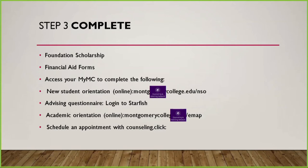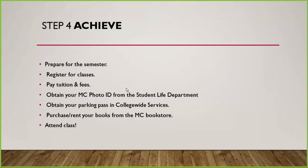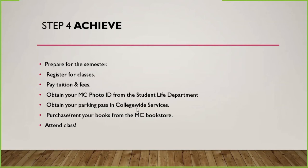Attend an academic orientation online by clicking on the Starfish icon once you're inside your account. Once you activate your account, you will be able to make an appointment with a counselor. The fourth step is to prepare for the semester — make sure you have your books ready, know what classes and buildings you will attend, and the class hours. You will register for classes online, pay tuition and fees, obtain your Montgomery College ID from Student Life, obtain your parking pass from college-wide services, purchase or rent your books, and then the last step is to attend classes.